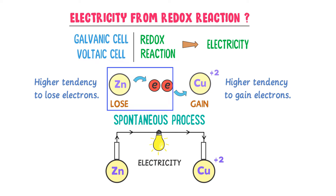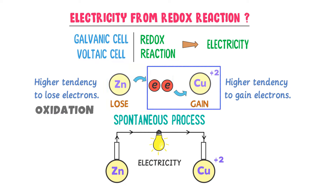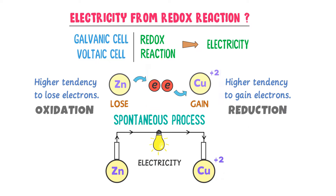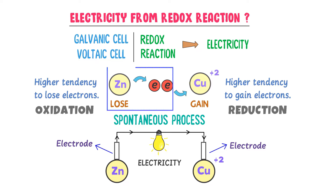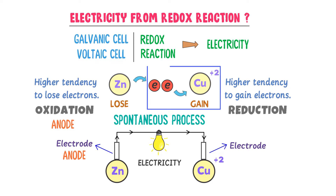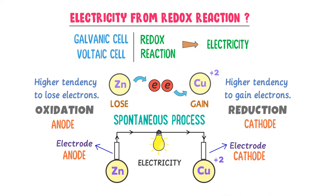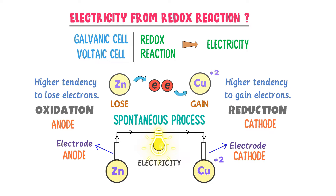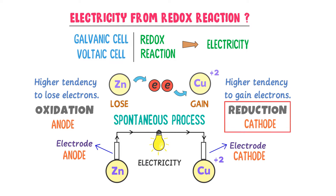Here, zinc loses two electrons — it is oxidized — while copper gains two electrons — it is reduced. The zinc plate is called an electrode and the copper plate is also called an electrode. Oxidation takes place on the zinc plate, so it is the anode, while reduction takes place on the copper plate, so it is the cathode. Therefore, the oxidation and reduction reactions generated electricity in this example. Remember: the plate at which oxidation occurs is called the anode, and the plate at which reduction occurs is called the cathode.